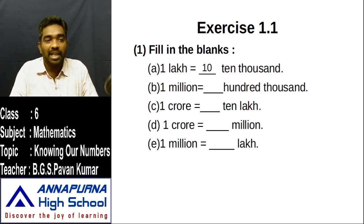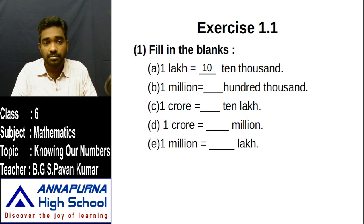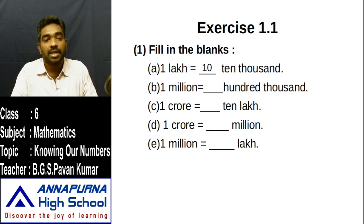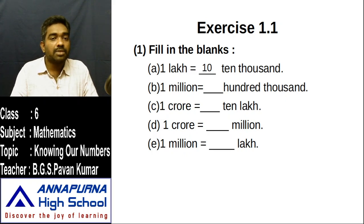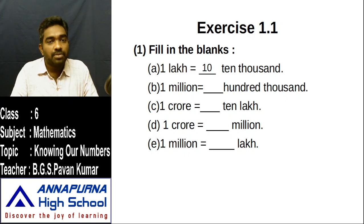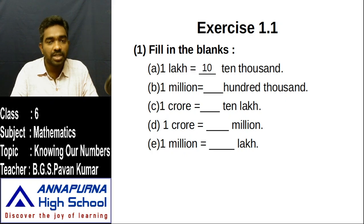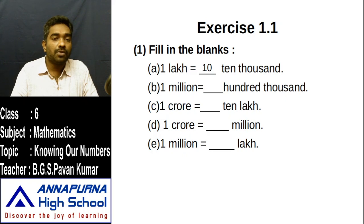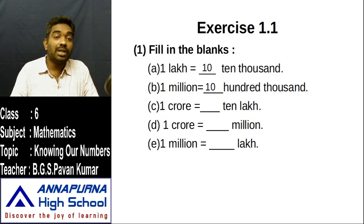Next one: one million is equal to how many hundred-thousands? In one million, how many zeros are there? Six zeros. In hundred-thousands, how many zeros are there? Five zeros. The difference is one zero. Put one before the zero, that is ten. So one million is equal to ten hundred-thousands.